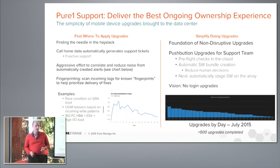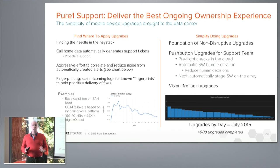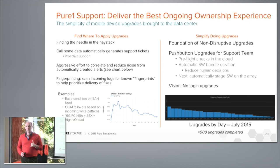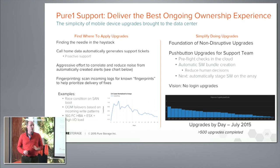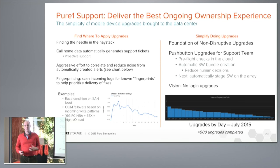The first thing we want to do is deliver a proactive support experience. The way we do that is we basically look at the incoming call-home data we have and auto-generate support tickets for ourselves. We don't rely on the customer to monitor the system and call us if it breaks. We auto-generate support tickets, and historically 70% of all the support tickets we have in Pure Storage have been automatically generated. That's a great proactive experience because we're essentially monitoring the system for our customers, and we continue to push that and do more.